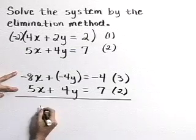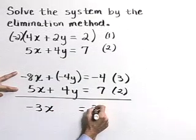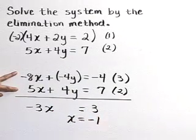Adding our x variables, over here we get a negative 3x, and that's equal to 3, or x is equal to negative 1.